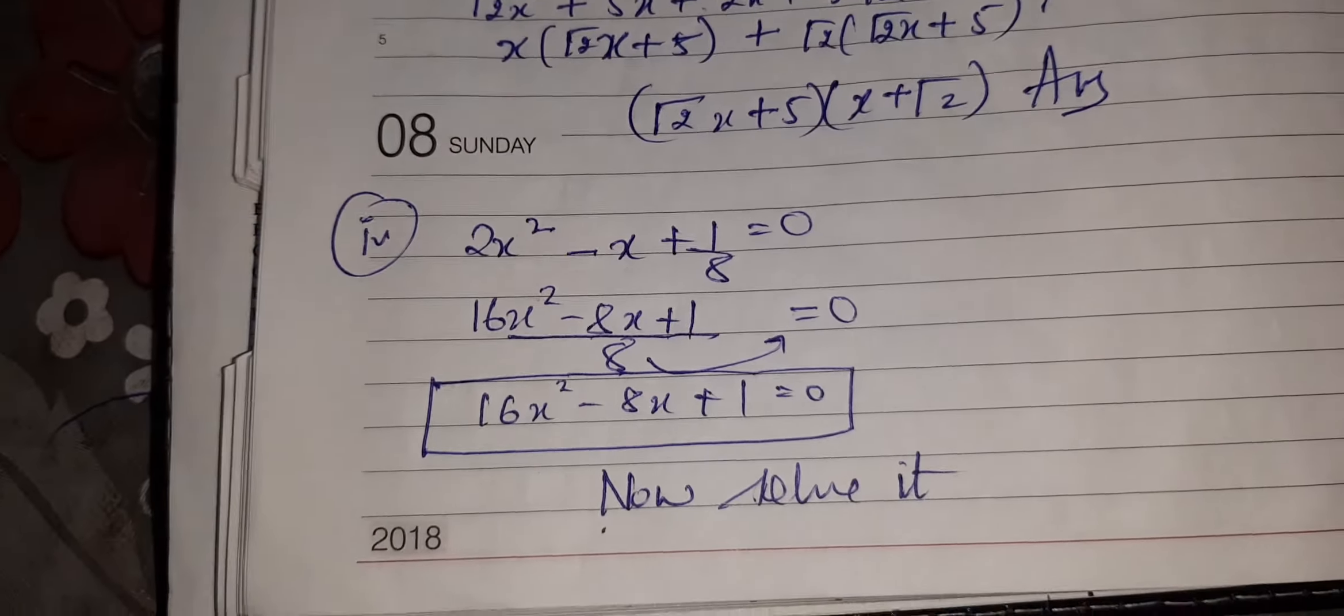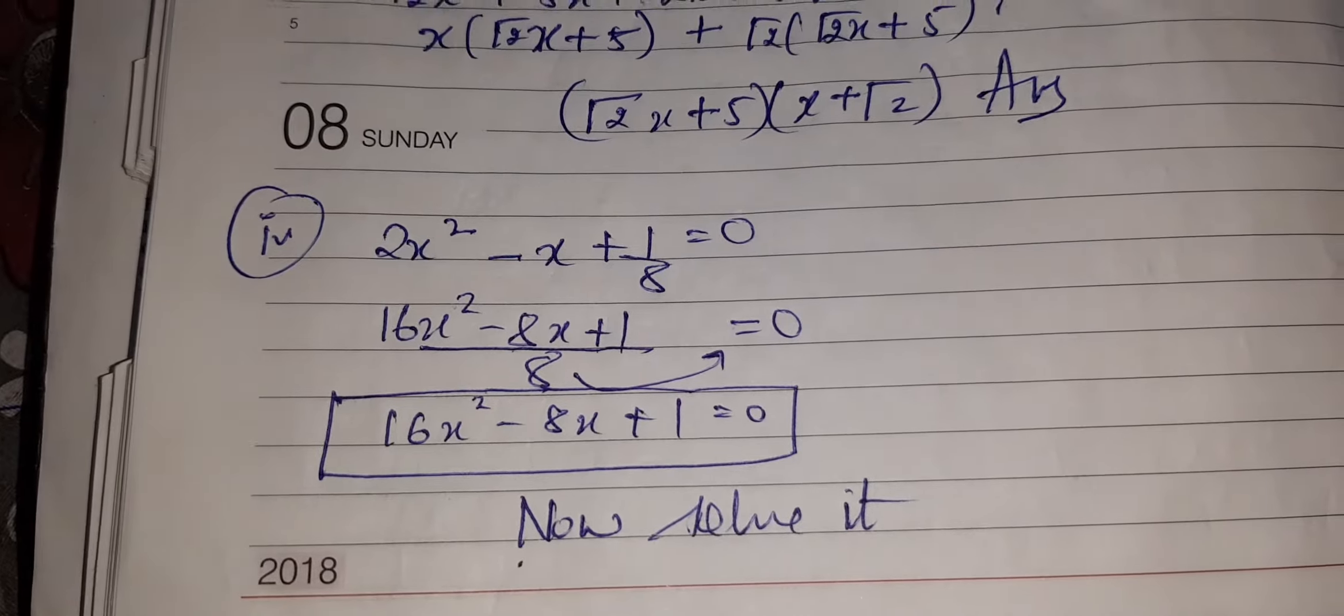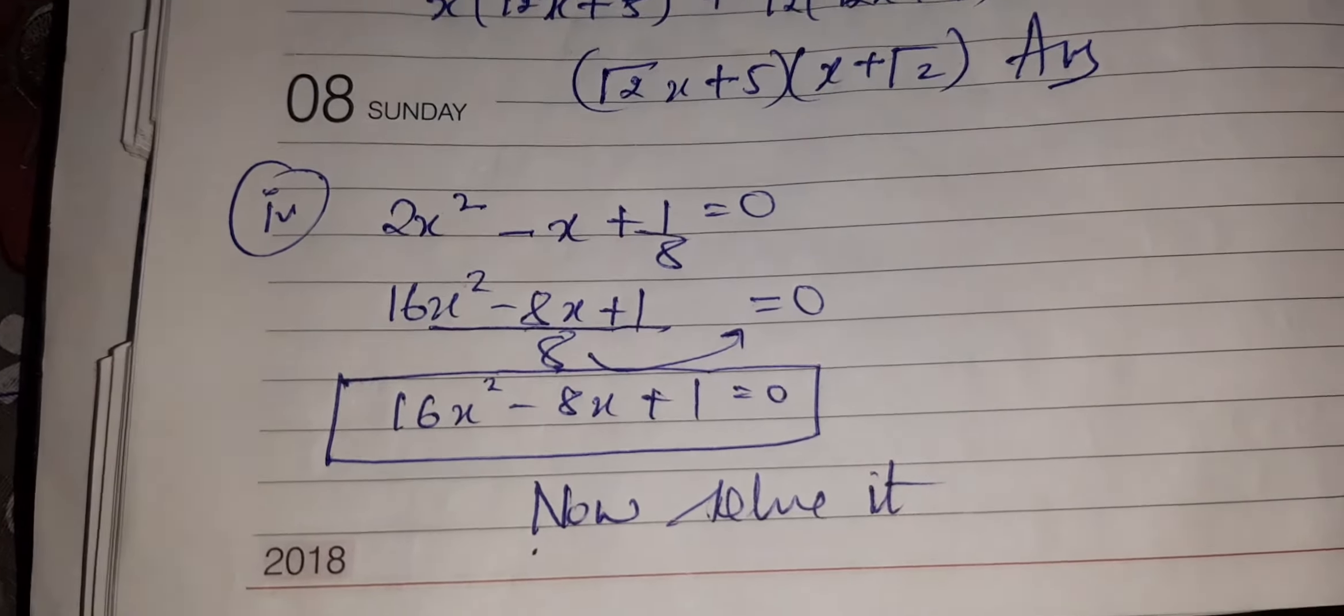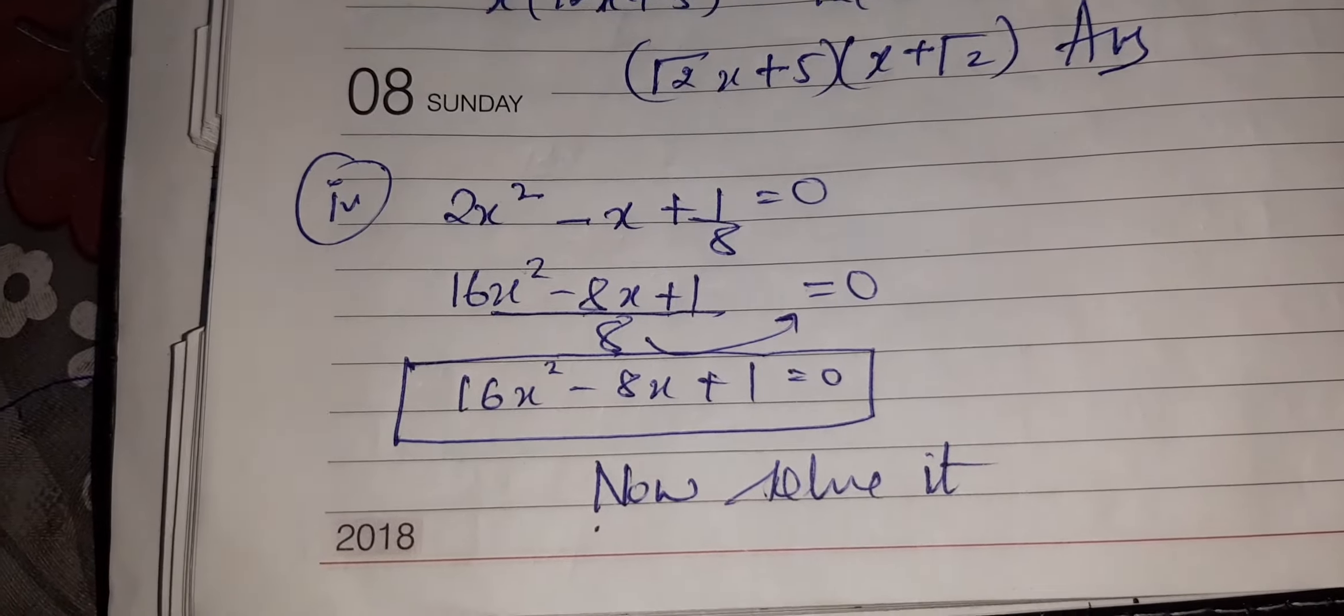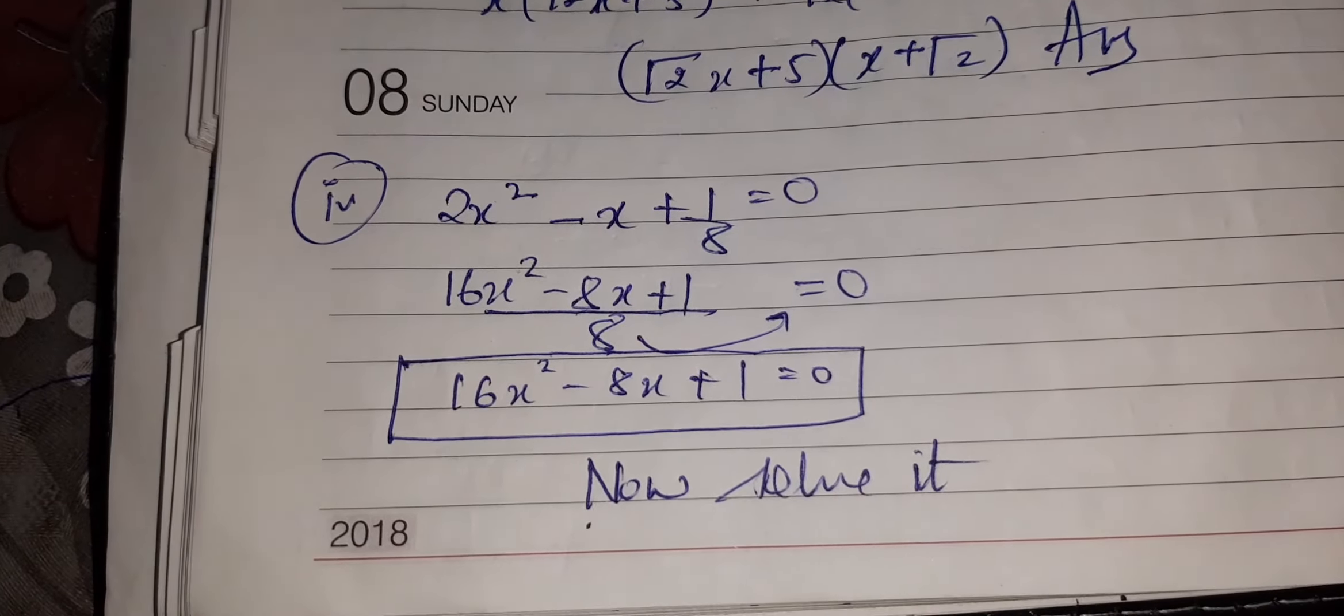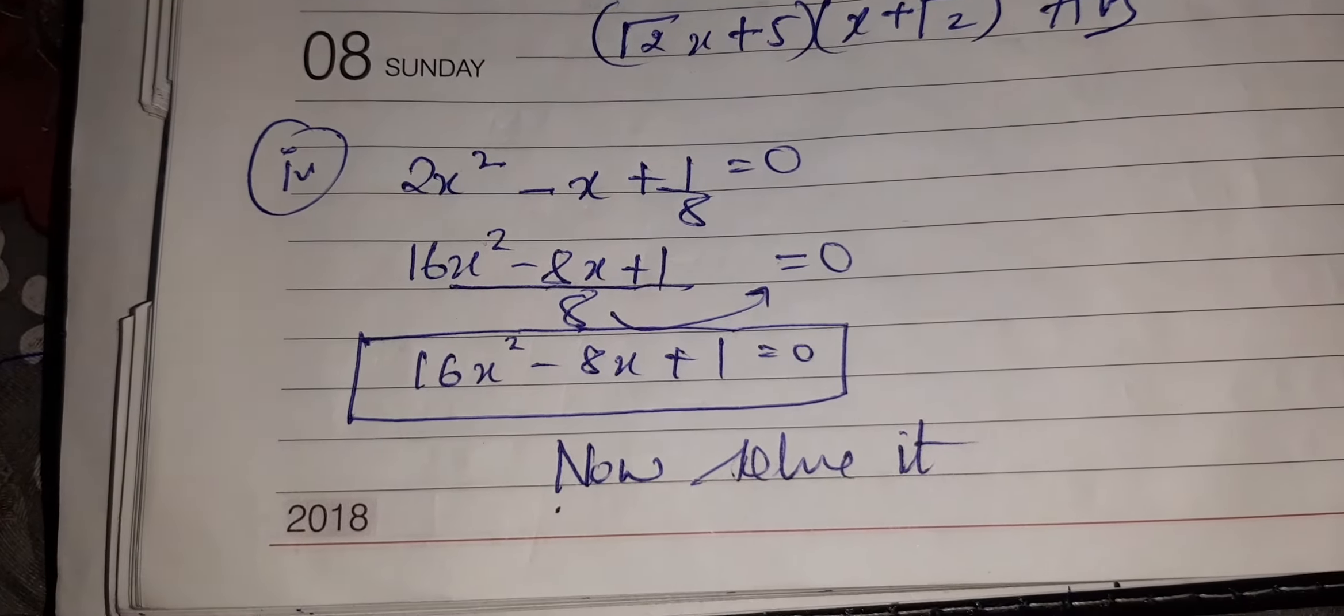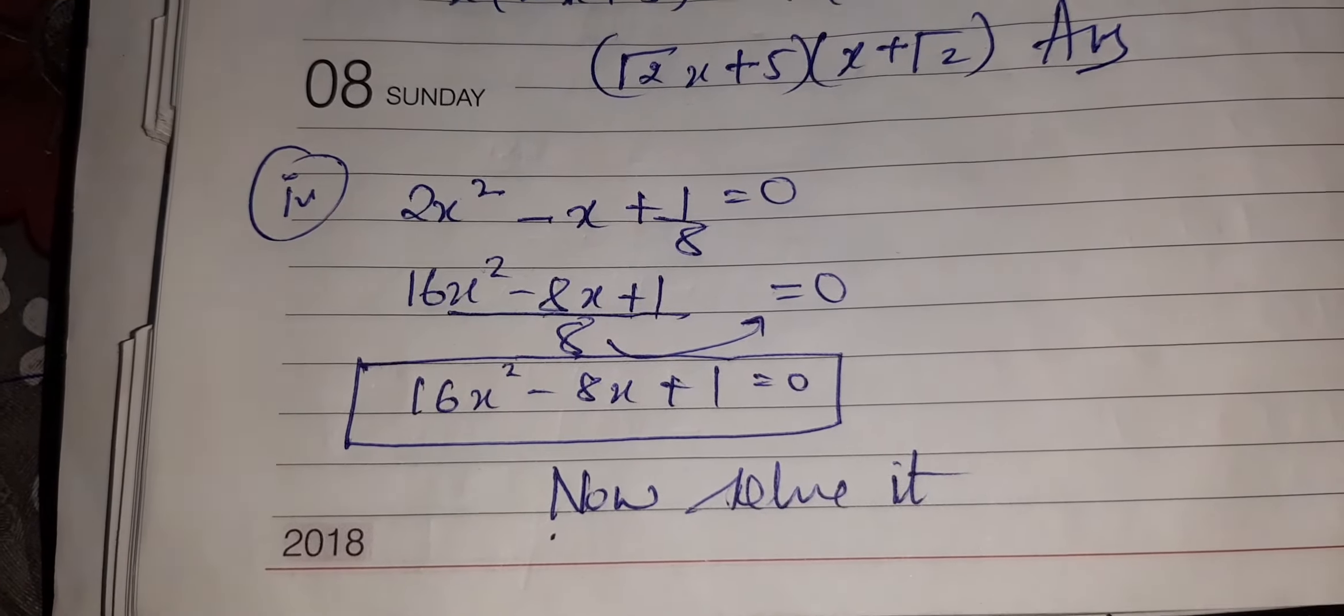Fourth part: 2x² - x + 1/8 = 0. I have taken 8 as LCM and solved it. 16x² - 8x + 1 = 0. So just solve it by taking 4 plus 4 is 8, 4 times 4 is 16. Then take them, start taking common, you will get the roots. You will easily get the roots. Got it?